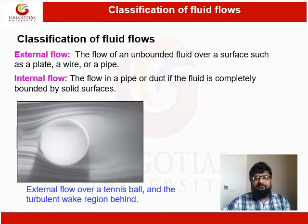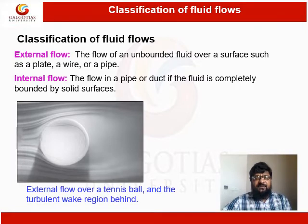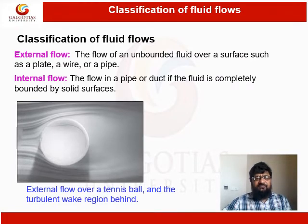Let us have some discussion on the classification of fluid flow. We do classification of fluid flow to ease our burden. In terms of fluid flow over a surface, we can say that a fluid flow is an external flow if an unbounded fluid flow over a surface is happening, such as over a car, over a pipe, over a plate, over a building, etc. All of these types of flow are examples of external flow.